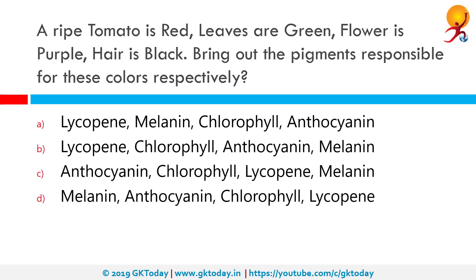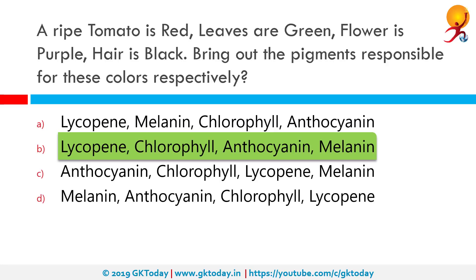A ripe tomato is red, leaves are green, a flower is purple and hair is black. Which are the pigments responsible for these colors? The correct answer is lycopene for tomato red, chlorophyll for leaf green, anthocyanin for flower purple and melanin for hair black. Lycopene is a bright red carotene and carotenoid pigment and phytochemical found in tomatoes and other red fruits and vegetables. Chlorophyll is the green pigment responsible for photosynthesis in leaves. Anthocyanins are a type of flavonoid found naturally in a number of foods and give fruits and flowers their purple color. Melanin is the same pigment that gives our skin color as well as our hair.